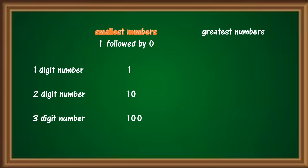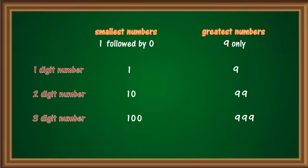Next, we shall form the greatest numbers, for which we will use the digit 9 only. We will begin with the greatest 1-digit number, which is 9. The greatest 2-digit number is 99, and the greatest 3-digit number is 999.